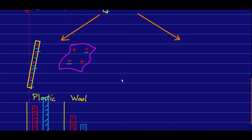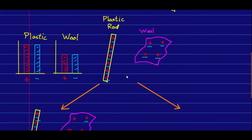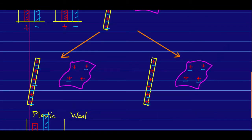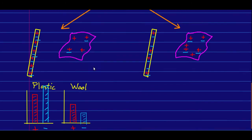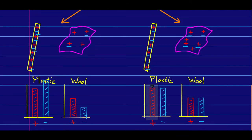But that's not the only possibility. It's quite possible that what happened was the opposite, where the rod lost some positive charge giving it to the wool, in which case the bar chart would look like that.